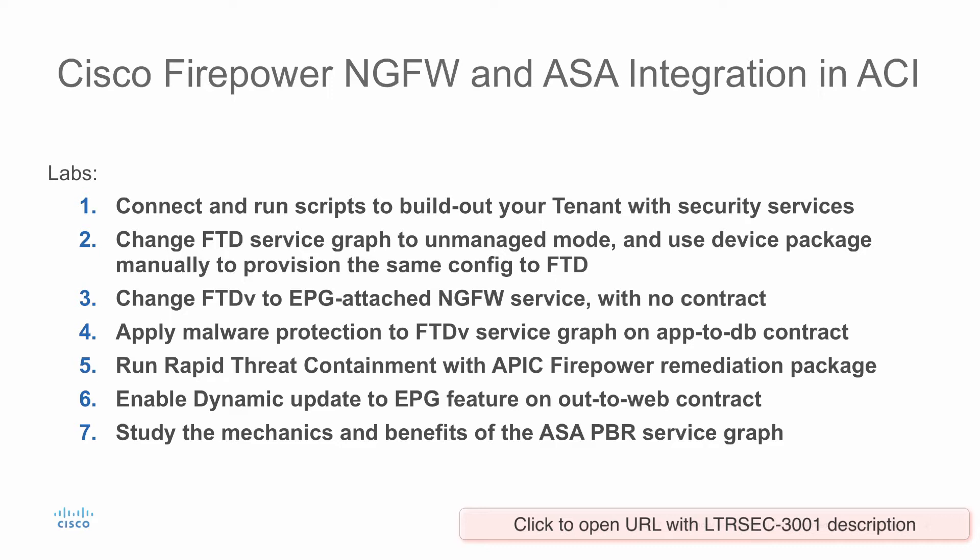In exercise number three, we are looking at integration of our next-gen firewall into EPGs directly — what is called EPG attached — without using a contract. We then provision malware protection onto our next-gen firewall and leverage protection and events based on that malware AMP protection to do containment of the VMs in the fabric. The last two exercises are related to ASA device package using dynamic updates to EPGs, as well as the policy-based redirect service graph, its benefits and mechanics.